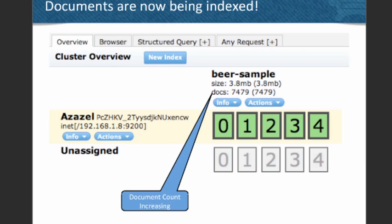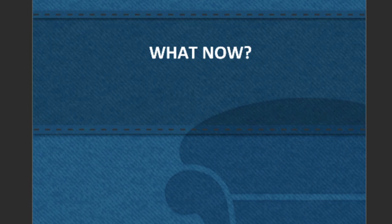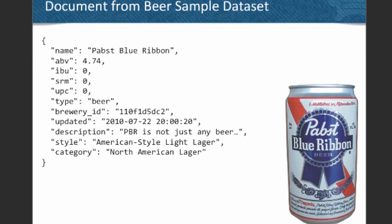If you switch over to the Elasticsearch user interface, you'll immediately see the document count starting to increase. As you reload, it will eventually show the number of documents that have been indexed. Once that's done, what can you do? We're going to go through a number of examples showing off some of the kinds of things you can do by integrating with Elasticsearch. First, I wanted to show a sample document. You may or may not have played around with the beer data set before.